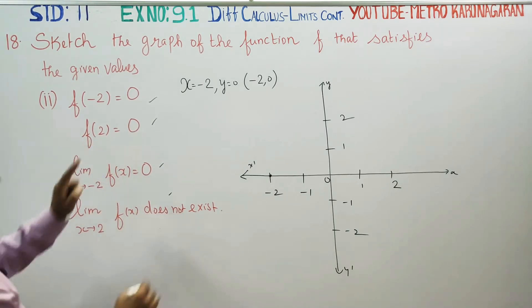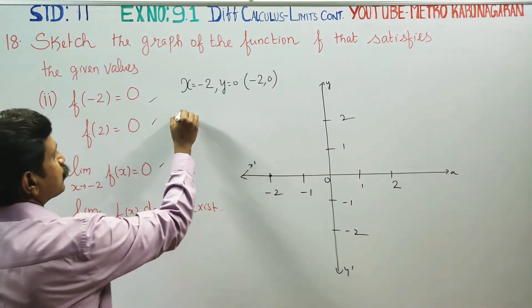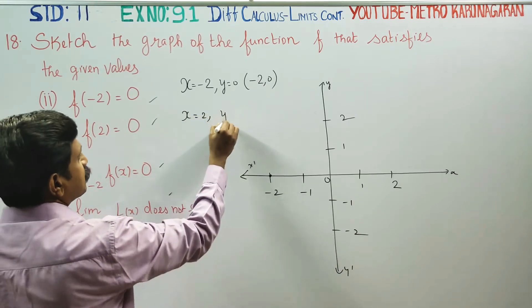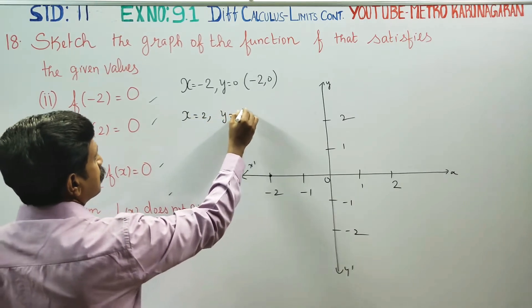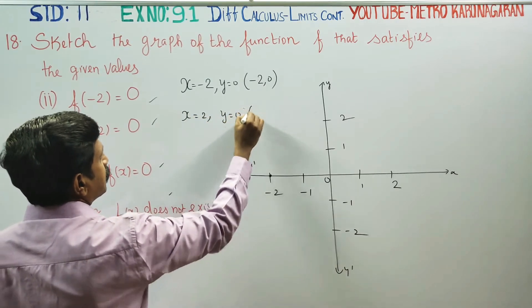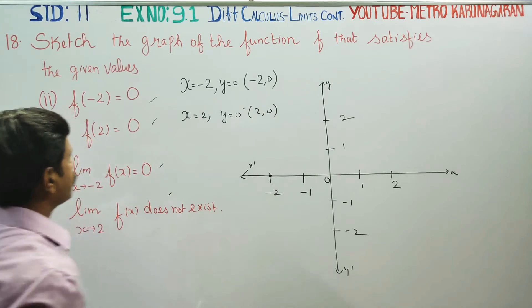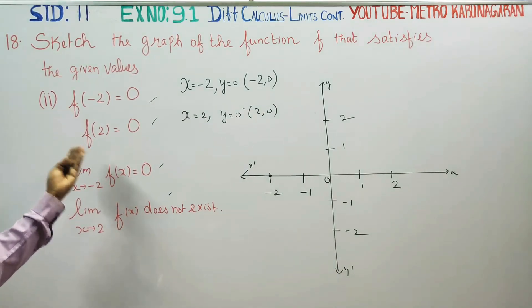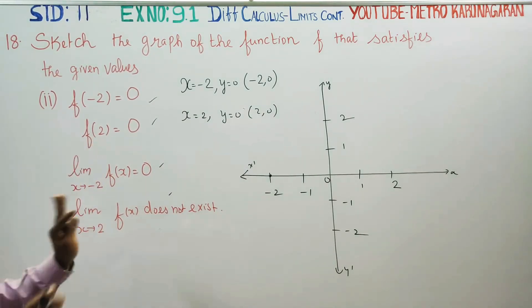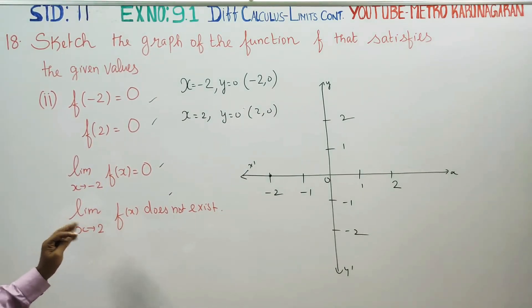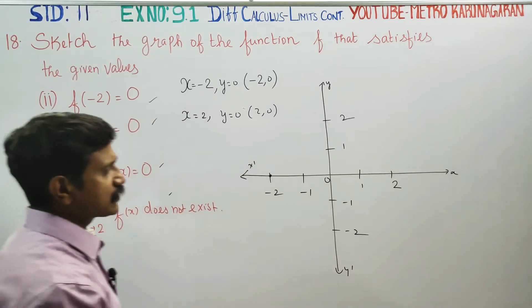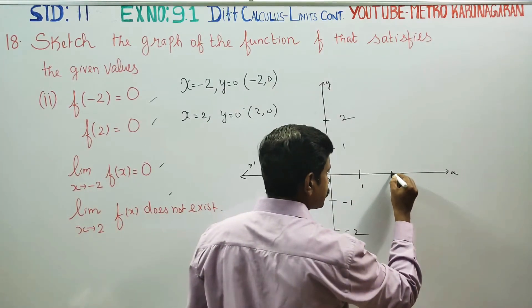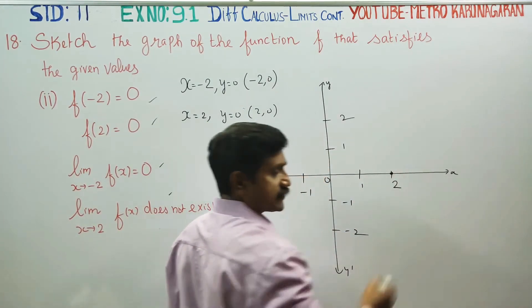When x is equal to 2, y is equal to 0. So the point is 2, 0 on the x-axis, with y equal to 0.